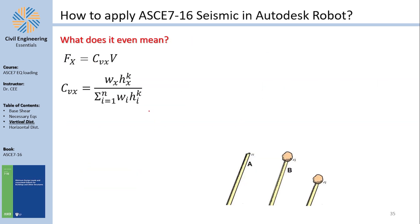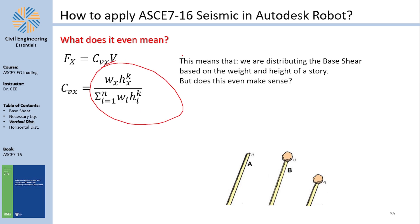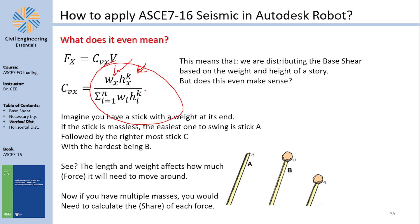How do we make sense of this function? It means first of all that higher stories and more massive stories take more share of the base shear. If you have a story that is higher and/or heavier, it will take more share from the base shear, because it is a ratio between the weight and the height to the power k divided by the total of all weights and heights of every story. But does it even make sense?